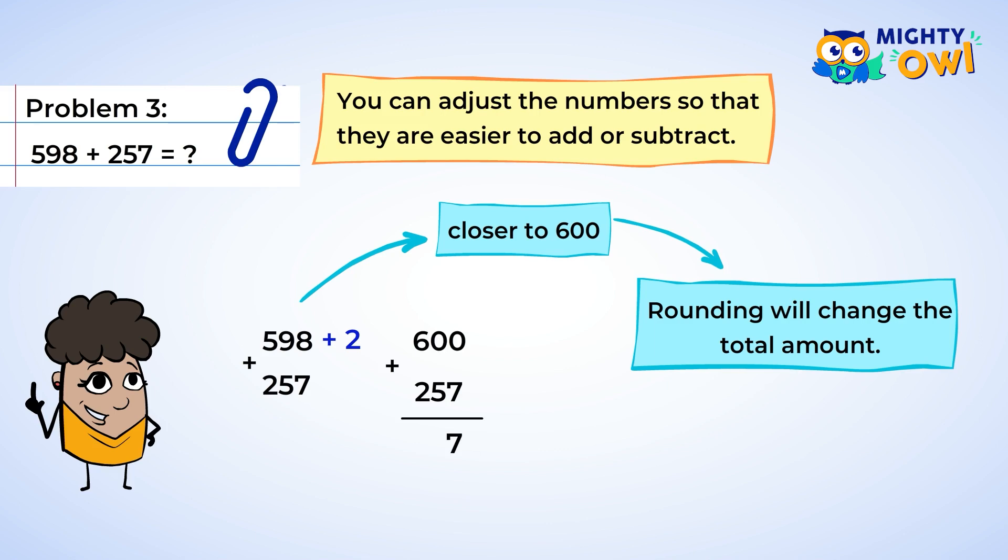Zero plus seven is seven. Now the tens place. Zero plus five is five. And next, the hundreds place. Six plus two is eight. The sum is eight hundred fifty-seven.